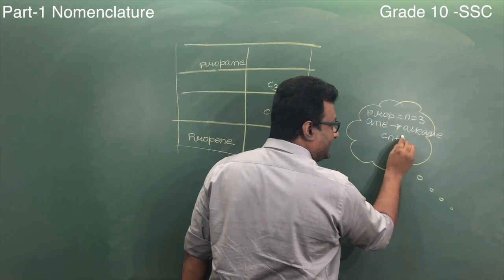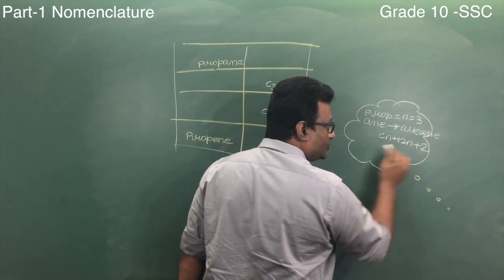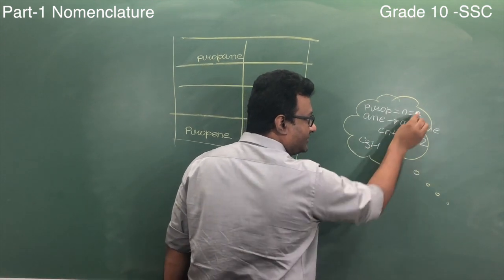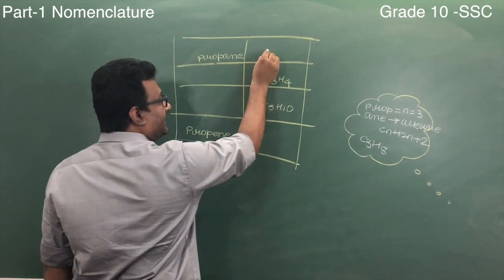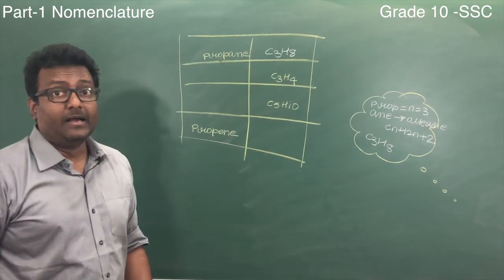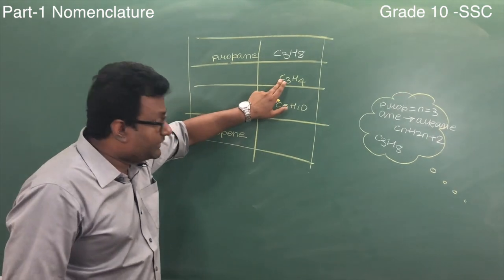So put the value of 3 in this. You will get C3H8. So this becomes C3H8.